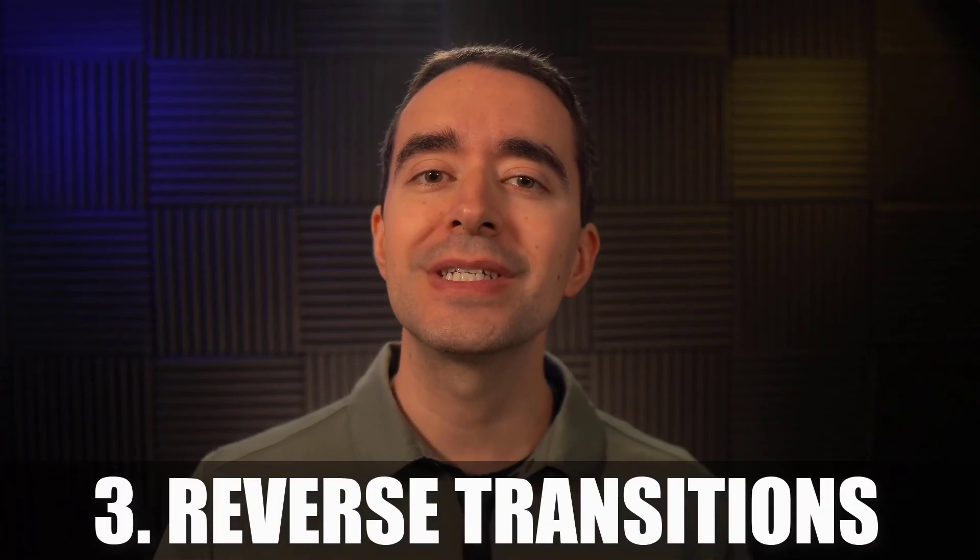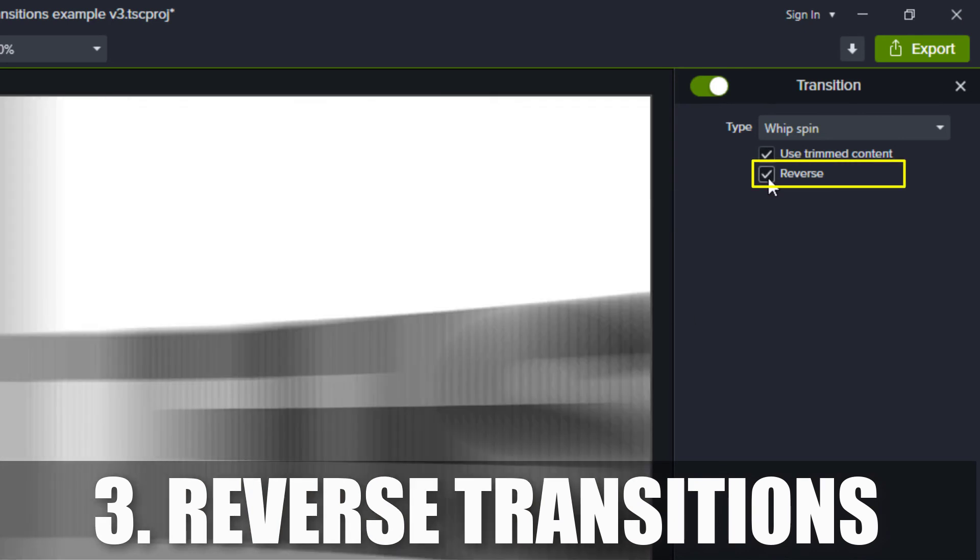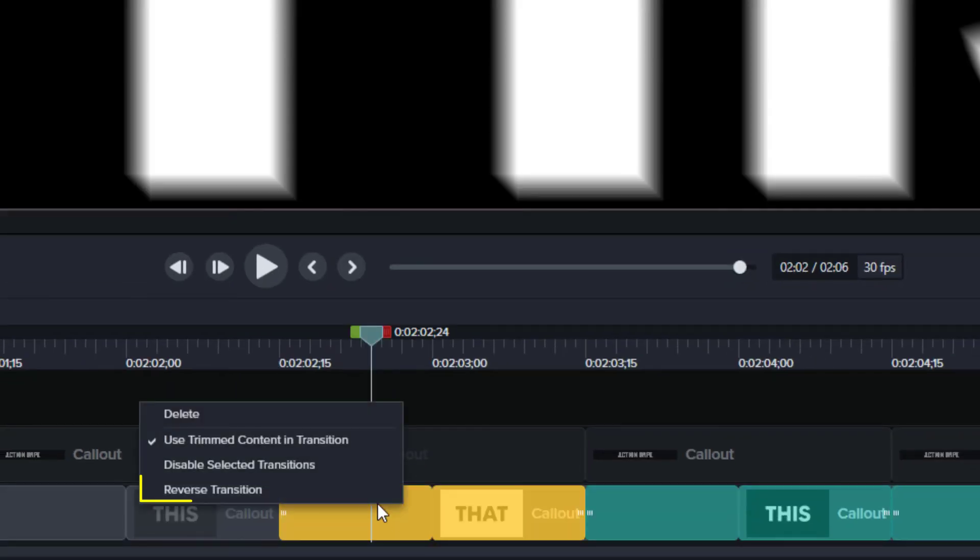And third, many transitions can be reversed. If you want a transition to work in reverse, you can click the reverse checkbox in the Properties panel. Or you can find the option when right-clicking the transition.